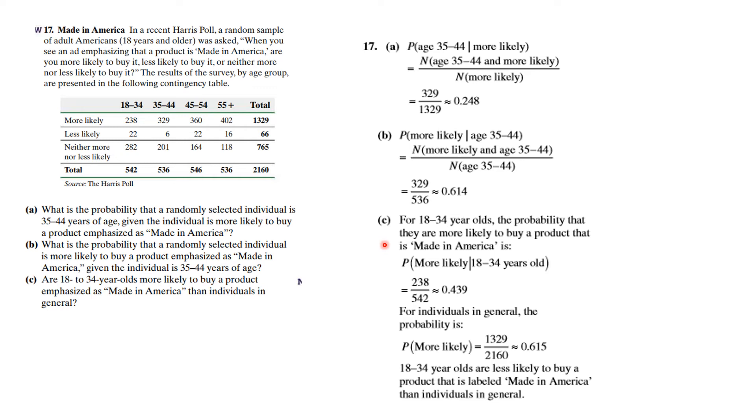The probability more likely given that you're in the youngest age group is less than half. The probability that you're more likely in general is you look at the grand totals. So you're going to look at 1329 divided by 2160. So you see the young people are less likely to care about it being made in America than older folk.